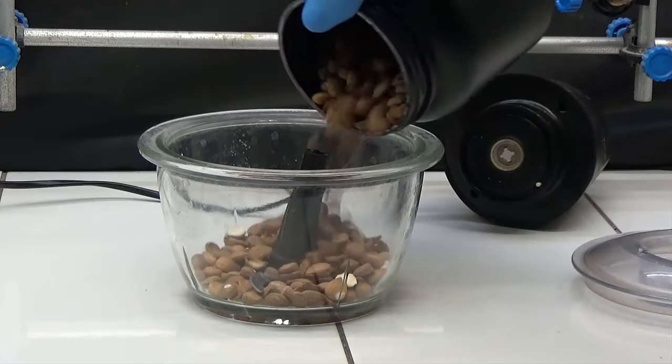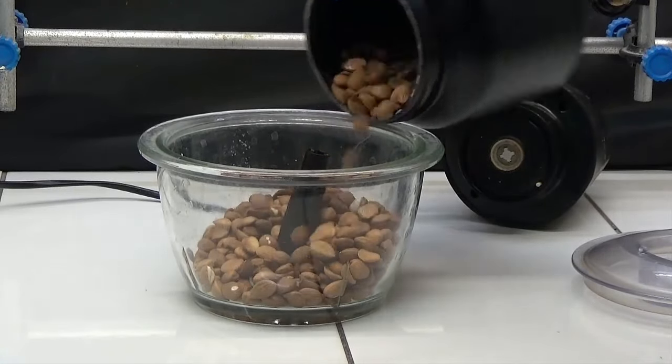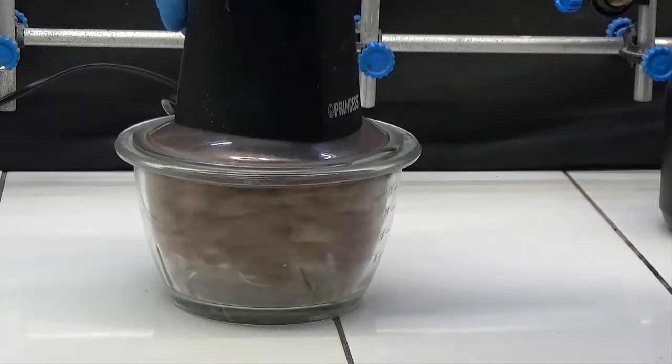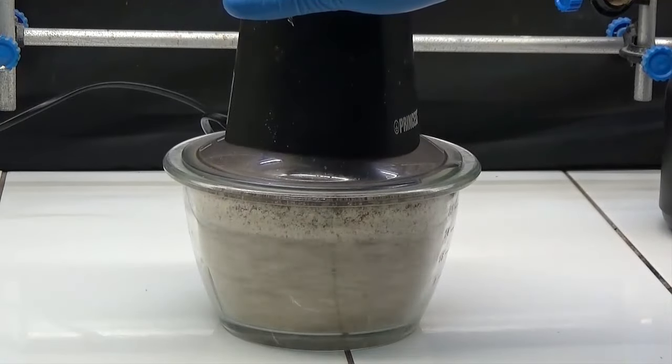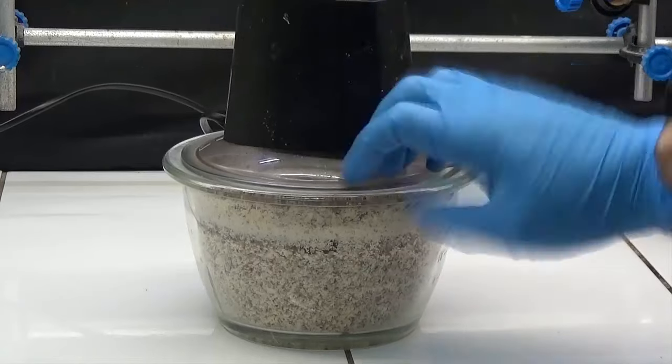We dried the seeds in a 60 degree oven for 24 hours. Crush approximately 150 grams of dry seeds.